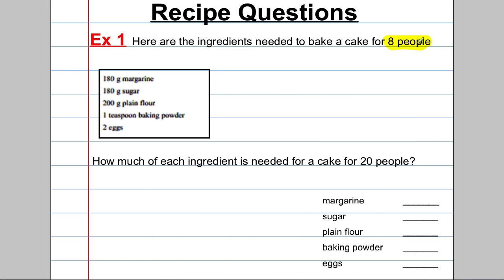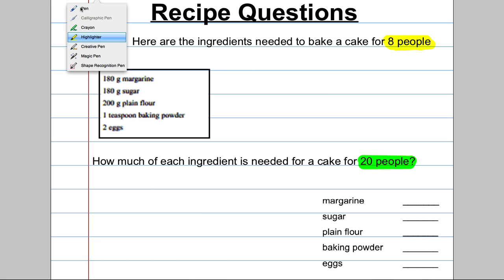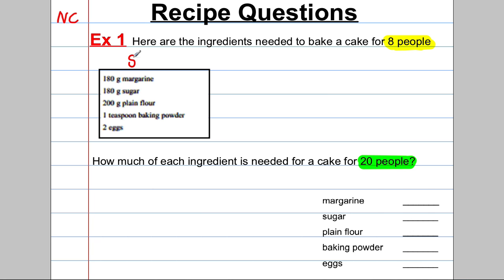The typical first style of question: they say here are the ingredients to bake a cake for eight people — highlight that 'eight people' — and they ask you how much of each ingredient is needed to bake a cake for 20 people. This usually comes up on the non-calculator paper. Always above the list of ingredients I would write 'eight people', and I need to get to 20 people. How do I do that with multiples or parts of eight?